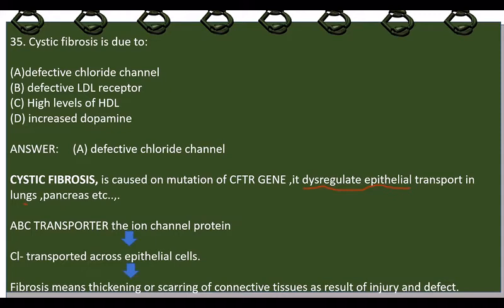In a normal human being, the ABC transporter — an ion channel protein — is present in every epithelial cell. When chloride comes, it is transported across the epithelial cell. When there is any injury or defect in any internal organ, this gene is activated, it transports the chloride, and fibrosis will occur. Fibrosis means thickening and scarring of connective tissue, which seals the injury or defect. When the CFTR gene is defective due to mutation, this process does not occur — this is due to the defective chloride channel, so option A is correct.